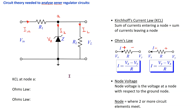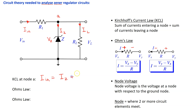The circuit theory needed to analyze Zener regulator circuits comes from application of Kirchhoff's current law and Ohm's law. Kirchhoff's current law states that the sum of currents entering a node equals the sum of currents leaving a node. Applying KCL to node A, we have one current IIN entering and two currents IZ and IL leaving, giving IIN = IZ + IL.